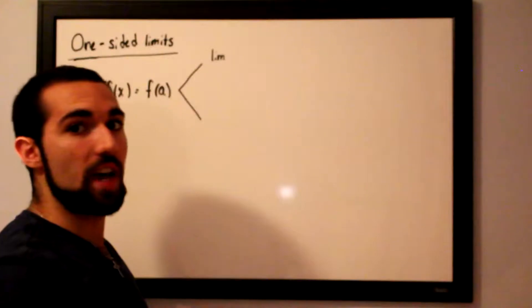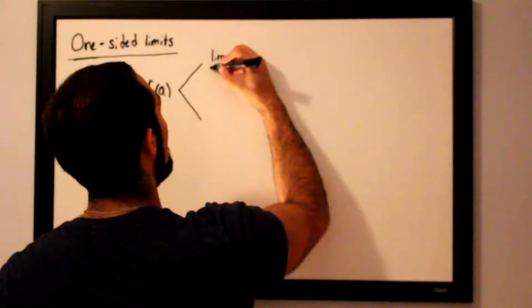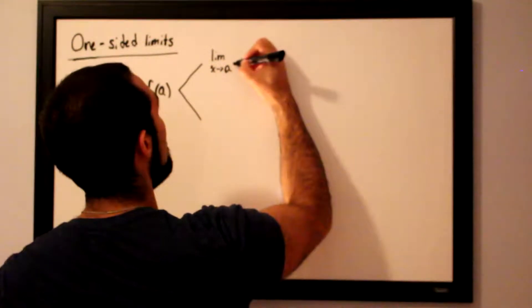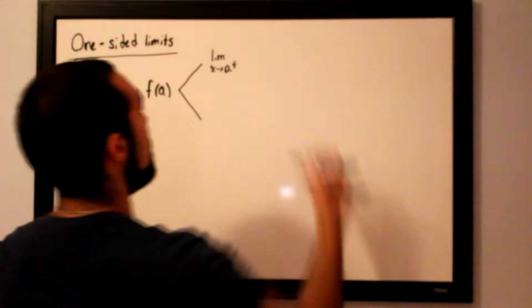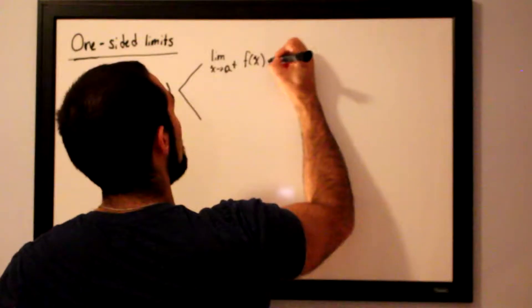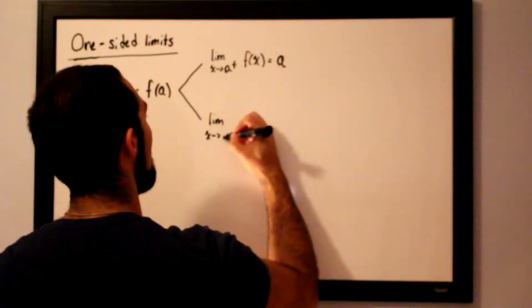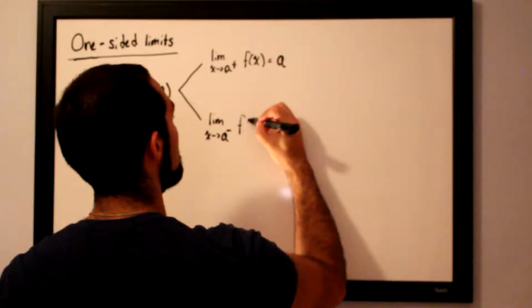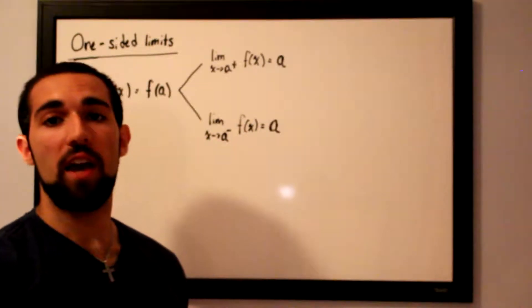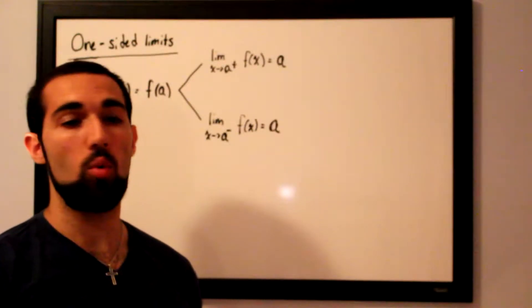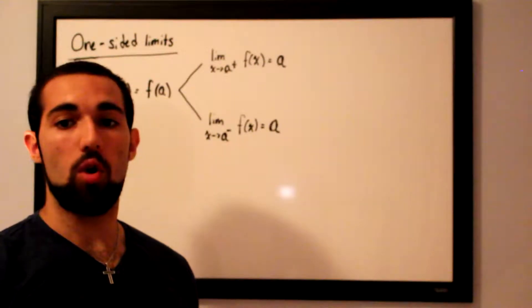These two conditions must be satisfied in order for this statement to be completely true. We take the limit as x approaches a from the right — the plus sign denotes from the right of the number line — of f of x, and it must equal f of a. Also, the limit as x approaches a from the left of f of x must also equal f of a. Essentially, the left-handed and right-handed limits must agree with each other; otherwise, the limit does not exist. This is a concept we'll explore later in the lecture.